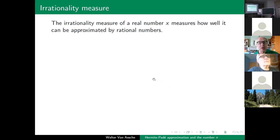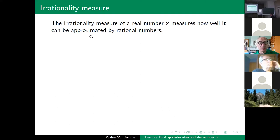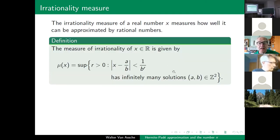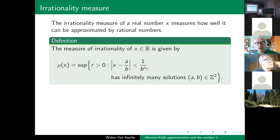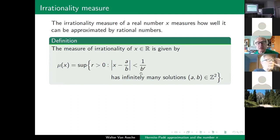Here I will explain something about how it is related to the irrationality of pi. The irrationality measure of a real number x measures how well the real number can be approximated by rational numbers. I approximate x by rational numbers a over b. If I can do this at order r — so if this is less than 1 over the denominator to the power r — and there are infinitely many such a, b, then I have a very good rational approximation. The bigger r is, the better the approximation. The supremum of such r is the measure of irrationality.